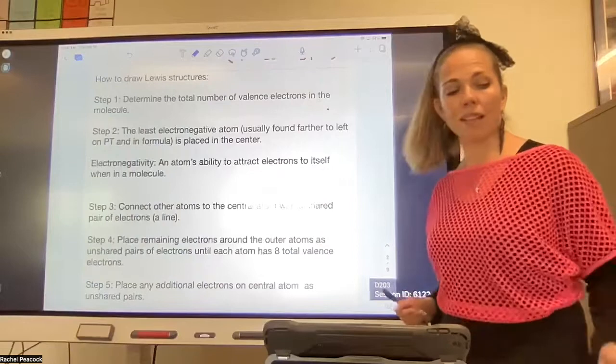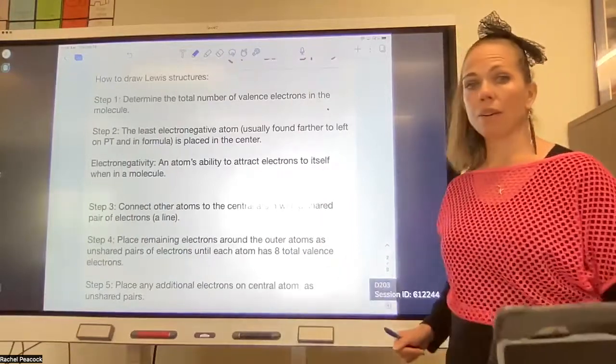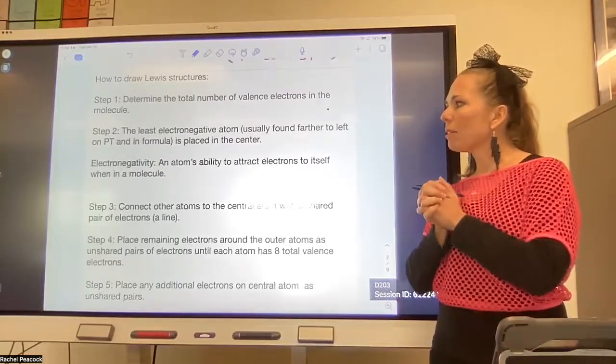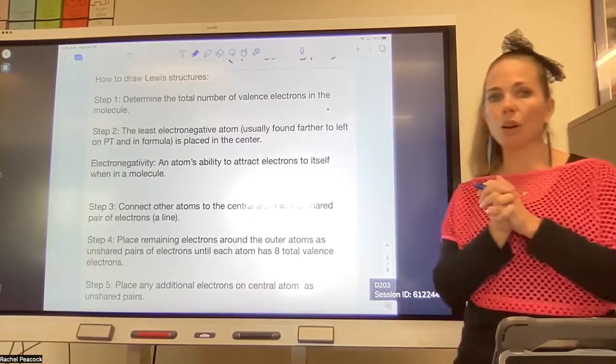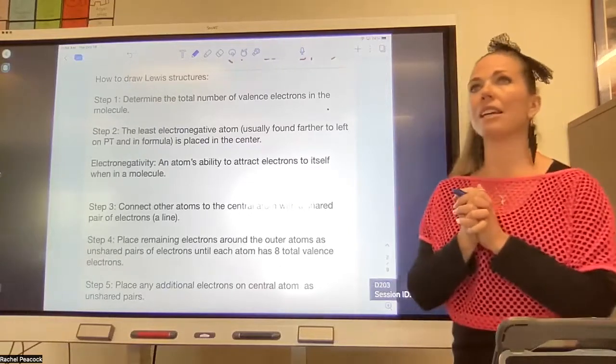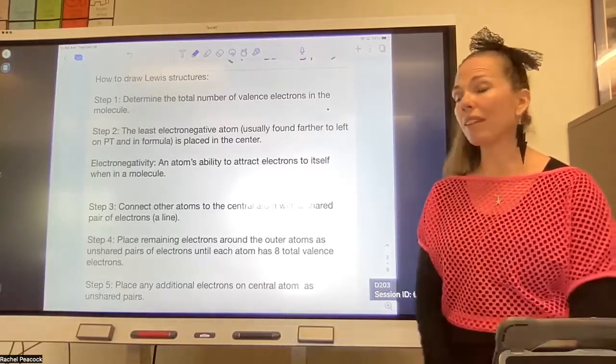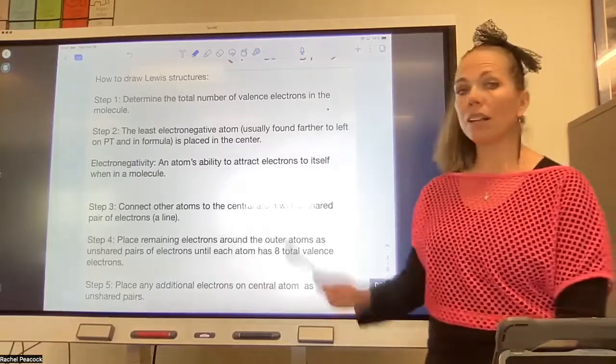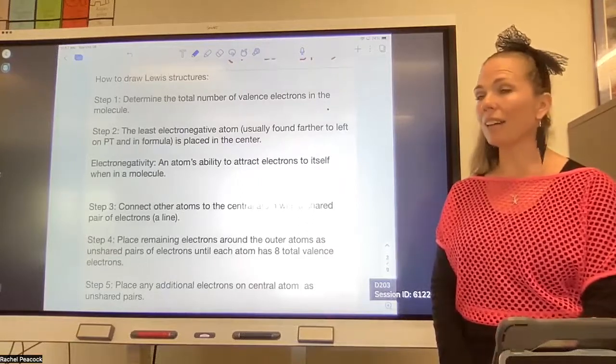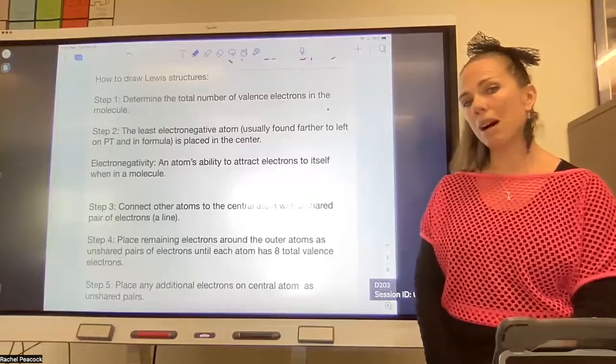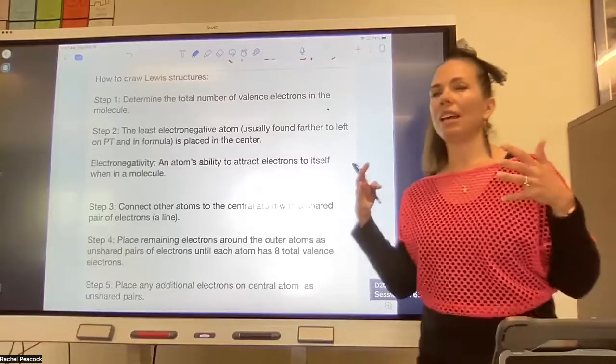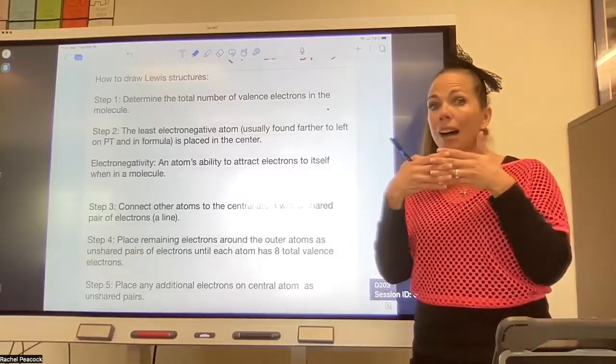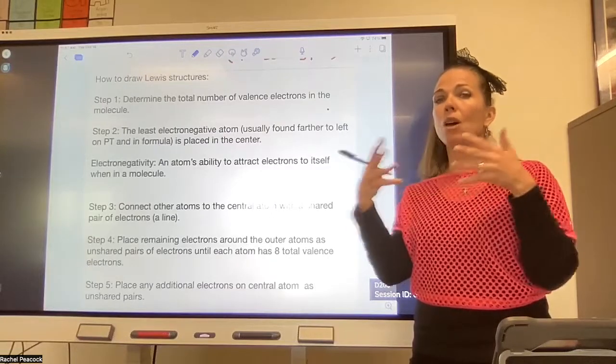You need to determine the total number of valence electrons in the molecule. So for each atom you have to account for the valence electrons. Step two: the least electronegative atom usually goes in the center. That is typically the element that is found on the left side of the formula, because it's less electronegative. Remember, electronegativity is an atom's ability to attract electrons to itself when in a molecule. So very specifically, it has to do with when an atom is bonding with another atom—which one has the better ability to attract an electron to itself.